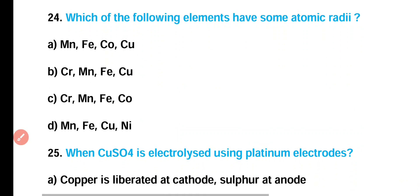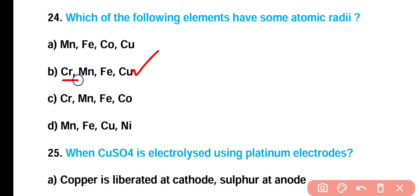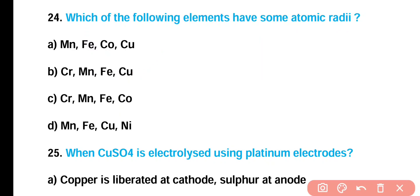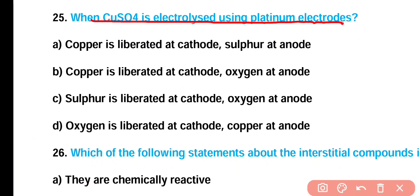Question number 24: Which of the following elements have the same atomic radii — (A) manganese, iron, cobalt, and copper; (B) chromium, manganese, iron, and copper; (C) chromium, manganese, iron, and cobalt; or (D) manganese, iron, cobalt, and nickel? Correct answer is option B. Chromium, manganese, iron, and cobalt have the same atomic radii.